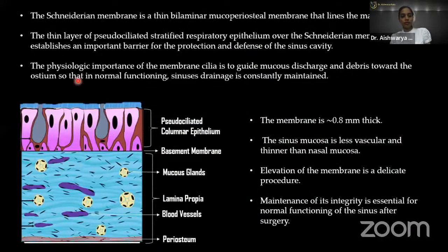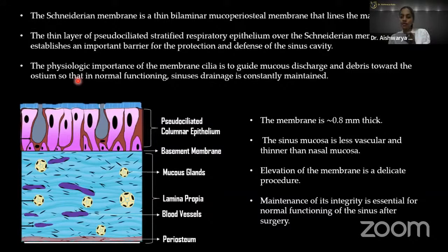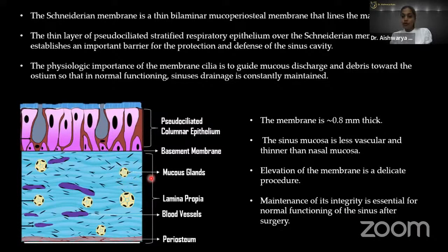The Schneiderian membrane is the sinus membrane — a thin bilaminar mucoperiosteal membrane lining the maxillary sinus. It consists of a thin layer of pseudo-stratified columnar epithelium and serves as the most important barrier for protection and defense of the sinus cavity. Its cilia guide mucous discharge and debris through the ostium for normal sinus function. The membrane can be as thin as 0.8 mm, and the sinus mucosal gland is less vascular and thinner than the nasal mucosal gland. Elevation of the membrane is a very delicate procedure, so maintaining its integrity is extremely important.